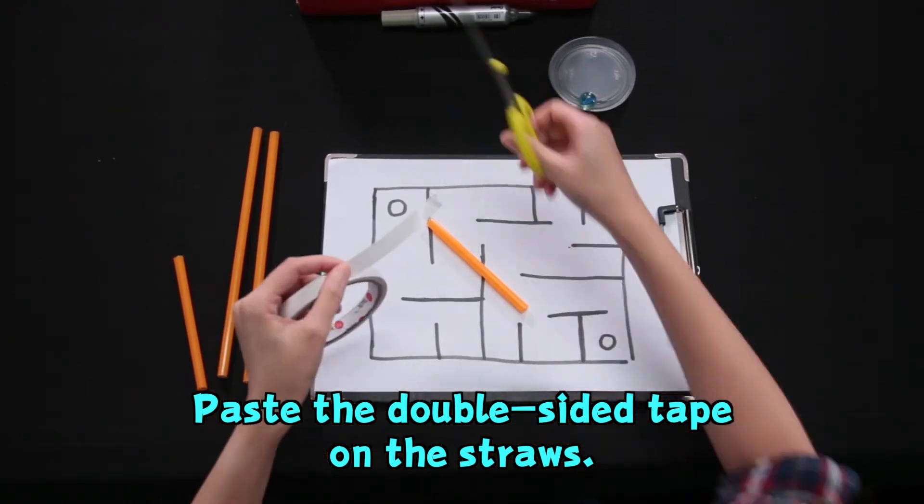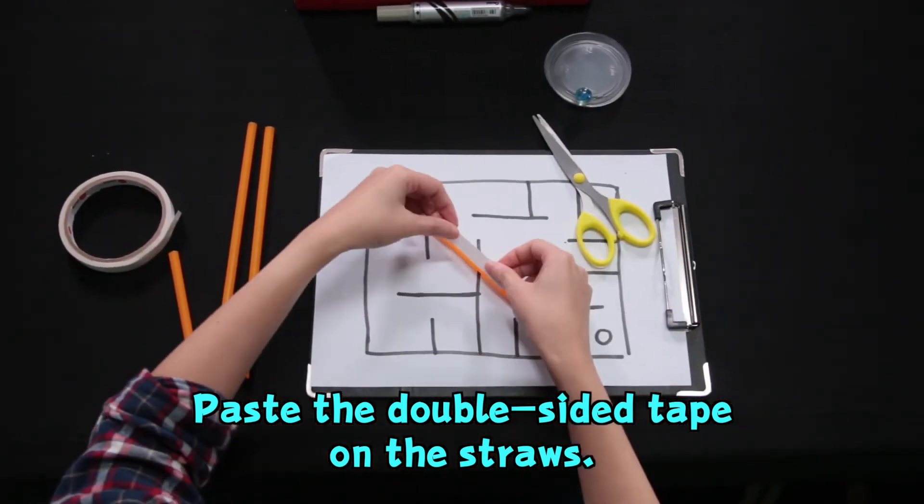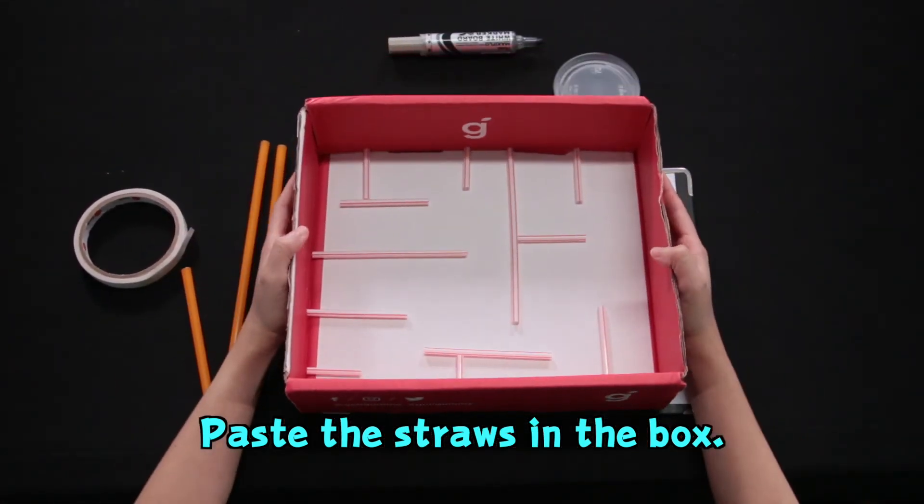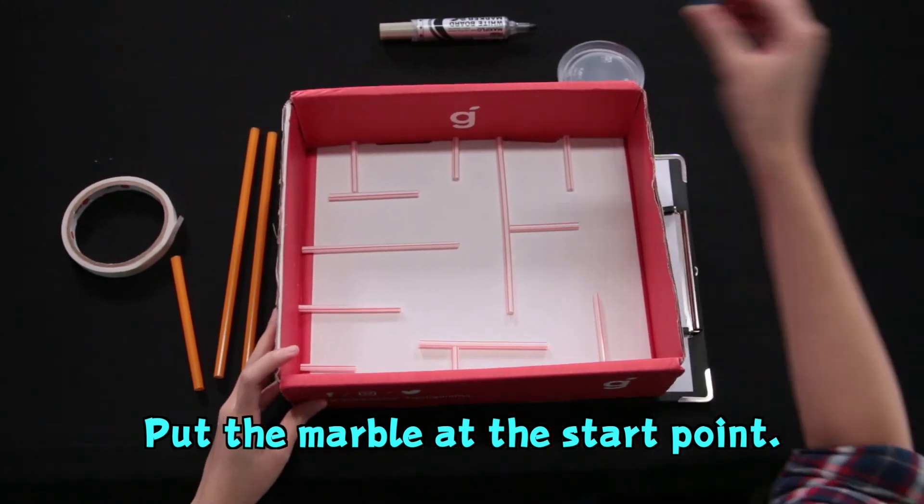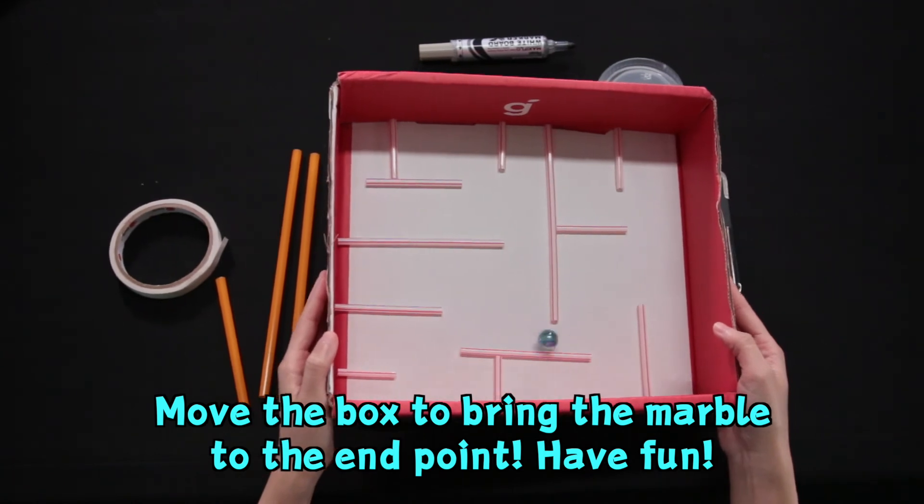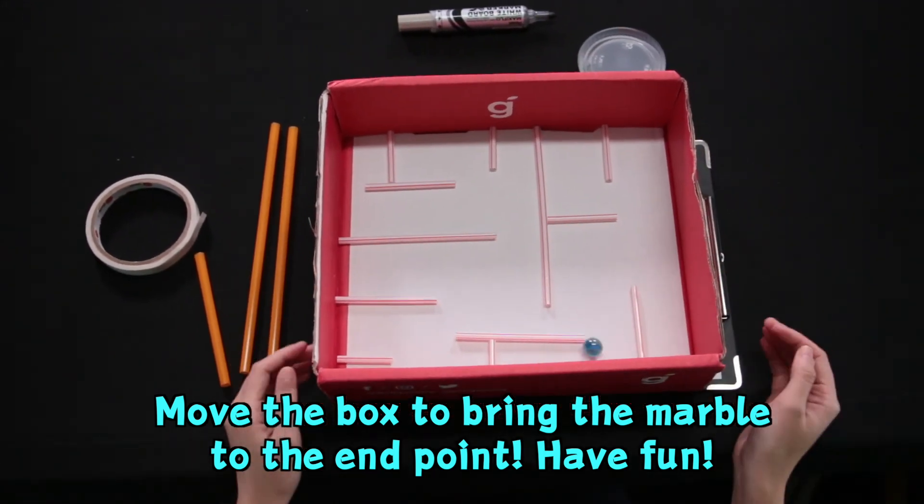Stick the straw onto the box and it will look like this. Take a marble, put it at the start point, and move along the box towards the end point. Have fun!